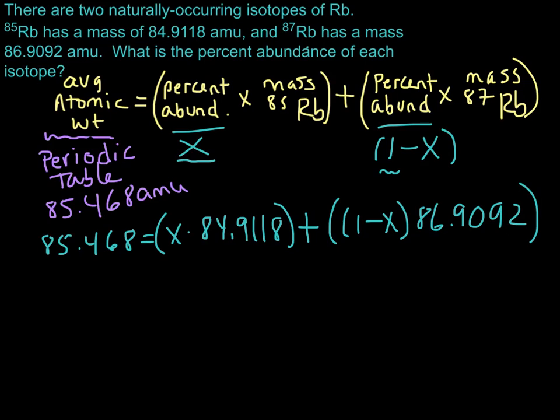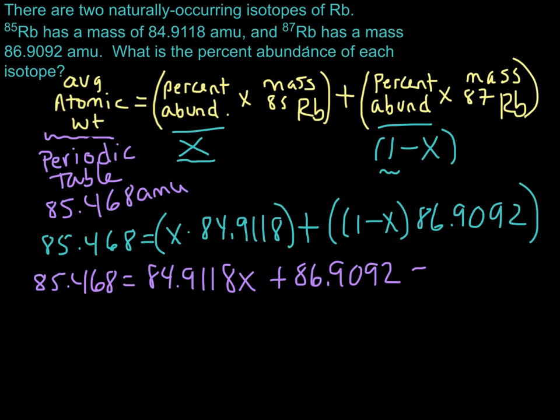So let's do that. So we're going to have 85.468, and that's equal to 84.9118x, and then let's go ahead and distribute this. So 1 times 86.9092. So 86.9092, that's 1, and then minus x. So it's going to be minus 86.9092 times minus x. So 86.9092x.